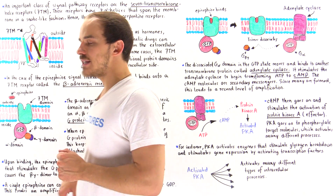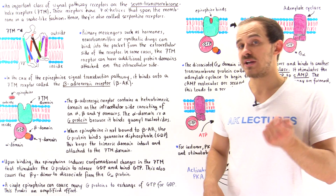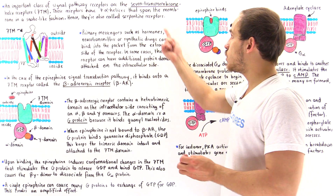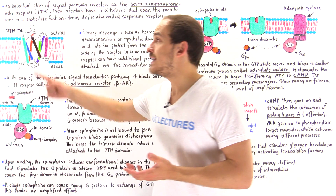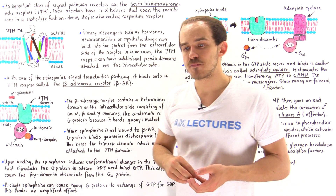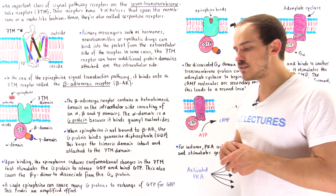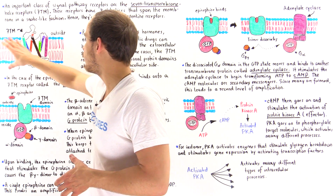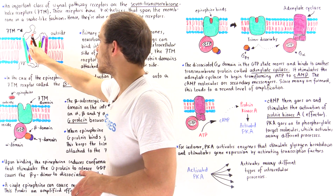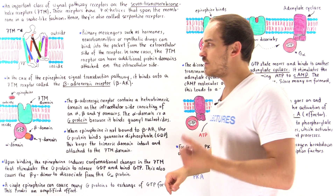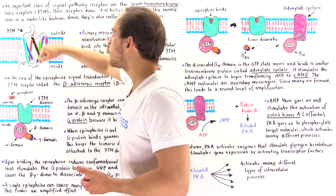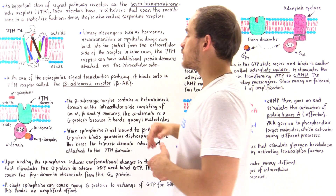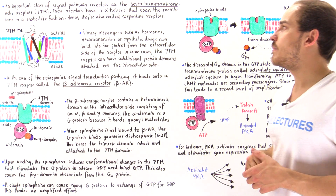Before we get to that, let's discuss an important category of transmembrane proteins used as receptors by these signal transduction pathways. These are known as the seven transmembrane helix receptors, or simply 7TM receptors. The structure of these receptors consists of seven membrane-spanning alpha helices, which span the membrane in a snake-like fashion — which is why we also call them serpentine receptors.